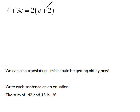Our last problem for this video, we have 4 + 3c = 2 times (c + 2). Now, here again, I really hope that you're seeing that distribution automatically. So we have 4 + 3c equals 2 times c is 2c, 2 times a positive 2 is a positive 4.